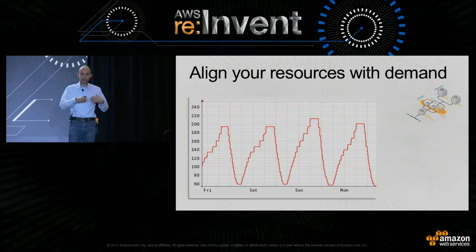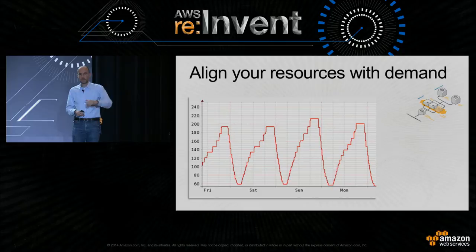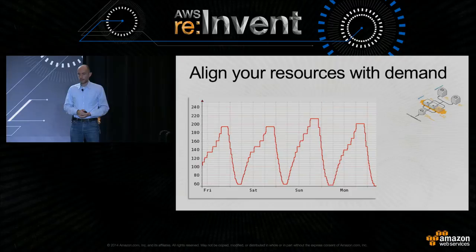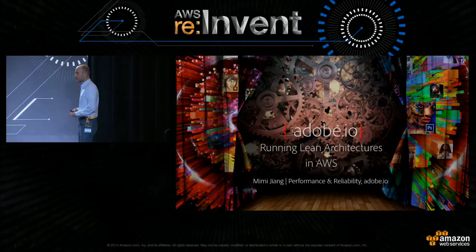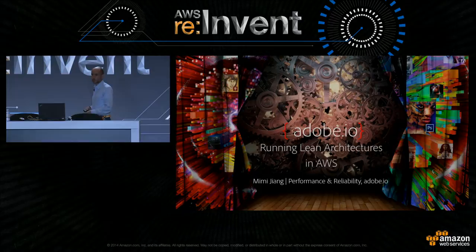Autoscaling means you can much better align resources with demand. As demand goes up, you get more instances. If demand goes down, instances are turned off automatically, and you save a lot of money. Let me now introduce Mimi Jiang from Adobe, who will tell you about their experience saving money and the strategies they used at Adobe.